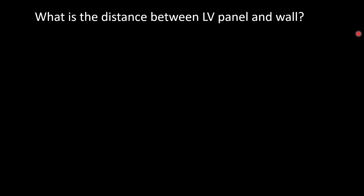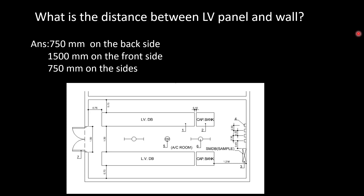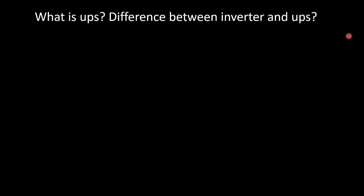What is the distance between an LV panel and the wall? This is predominantly asked in GCC interview questions. The answer: minimum clearance shall be 750 mm on the back side, 1500 mm (1.5 meters) on the front side, and 750 mm on the sides. As per DEWA regulations: back side 0.75 m, side 0.75 m, front side 1.5 m. The minimum distance between an LV panel and a capacitor bank is 100 mm.